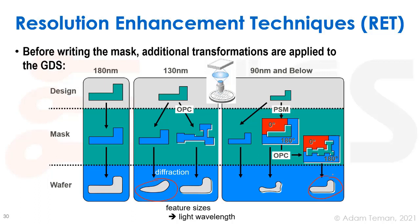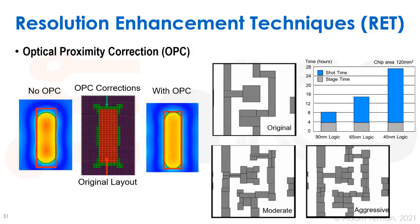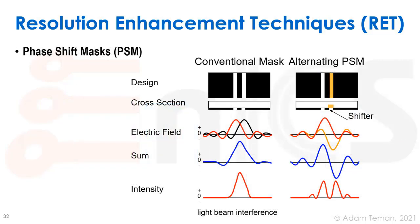At lower technologies we also have to use phase shift masks combined with OPC to get our desired shape. It gets even more complicated as we go to lower nodes. Nowadays we're using a 193nm laser to fabricate 7nm dimensions. We've recently transitioned to EUV which is a whole new story. Without OPC the results are terrible — OPC corrections make a much nicer shape. Moderate OPC adds some corrections, and aggressive OPC adds more — it takes a very long time to create these masks and they're very expensive.